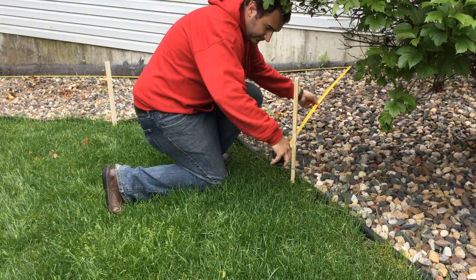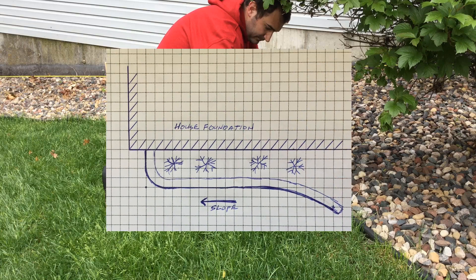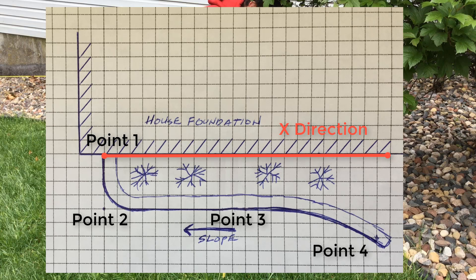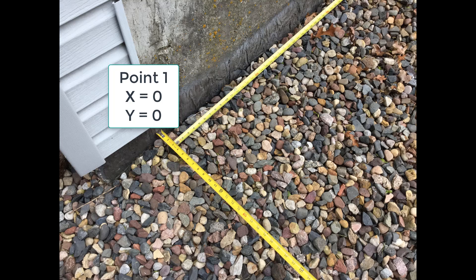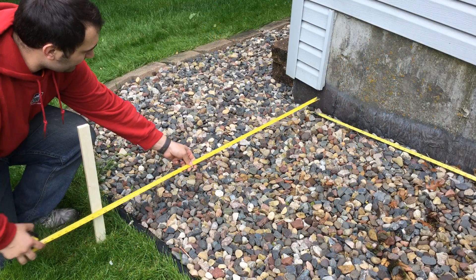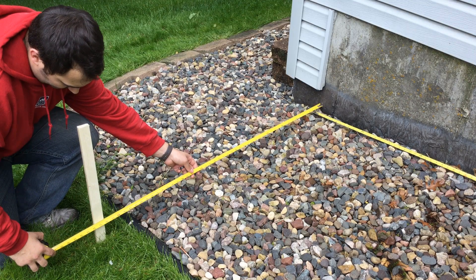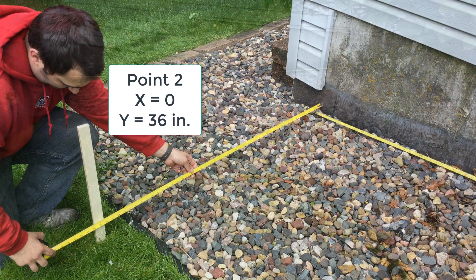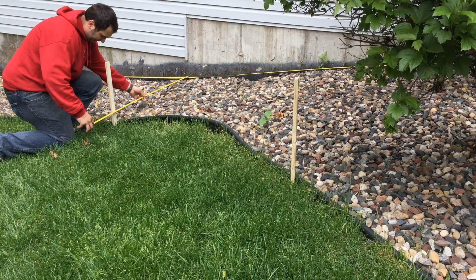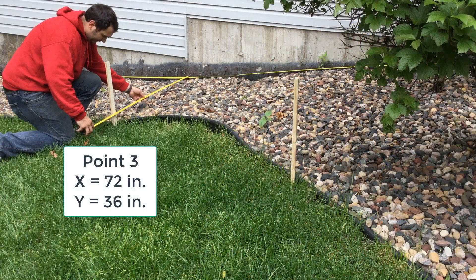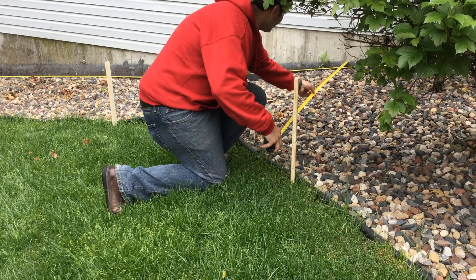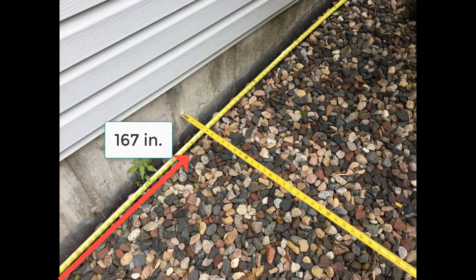Next, you will measure between the points. This information will then be entered in the AB app. The line at the house will be the x direction, with the distance away from the house the y direction. Point one is the starting point, so x will equal zero and y will equal zero. Measure out from point one at the house to point two, the first stake. Then move up to point three and measure out from the house to the point three stake. With the tape measure still in place, note the measurement up from point one to where point three crosses the x measurement. Repeat the same process again at point four to acquire the needed measurements.